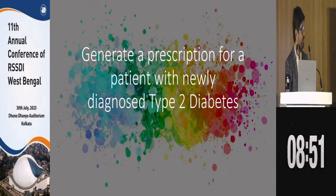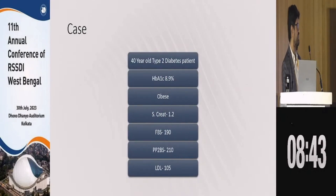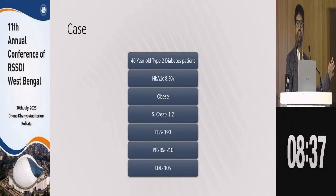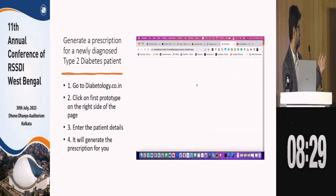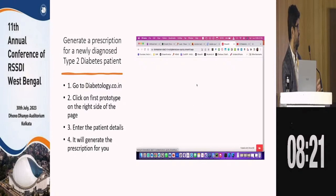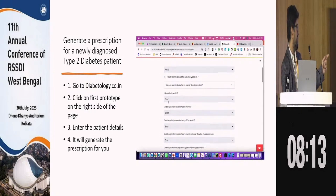Let's generate a prescription for a patient with newly diagnosed diabetes. This is a typical patient: 40-year-old type 2 diabetic, HbA1c 8.9, obese, creatinine 1.2, fasting glucose 190, post-meal 210, LDL 105. We have developed another module specifically for diabetes called diabetology.co.in — you enter all this data here in this module.